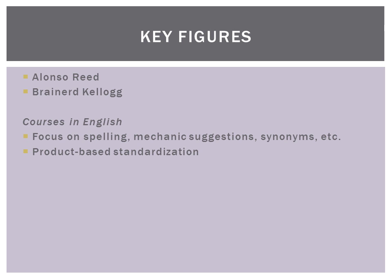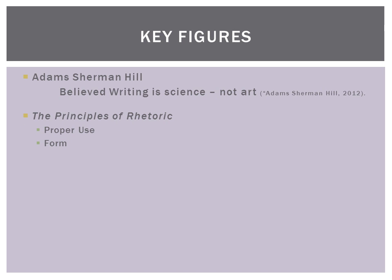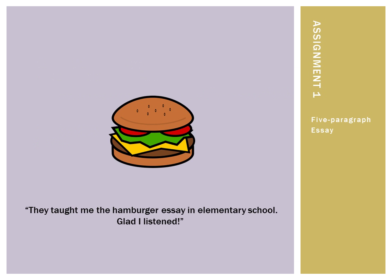Similarly, Adam Sherman Hill believed that writing is science, not art — there's a mechanical structure, like a recipe, for how writing should be completed. His book, The Principles of Rhetoric, explains this proper use of writing and how writing might look.